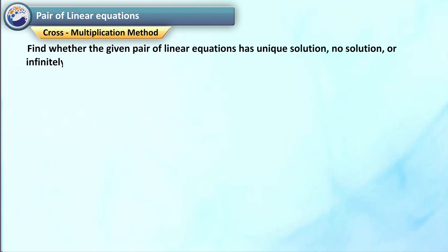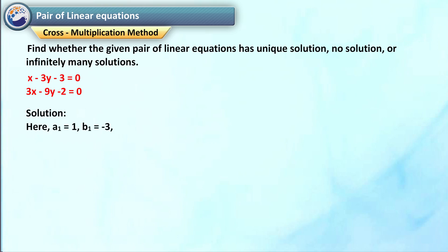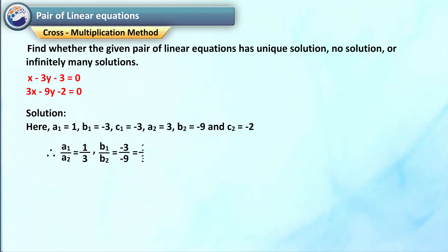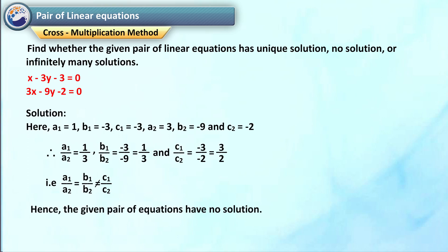Find whether the given pair of linear equations has a unique solution, no solution, or infinitely many solutions: x minus 3y minus 3 is equal to 0 and 3x minus 9y minus 2 is equal to 0. Solution: Here a1 is equal to 1, b1 is equal to minus 3, c1 is equal to minus 3, a2 is equal to 3, b2 is equal to minus 9, and c2 is equal to minus 2. Therefore a1 upon a2 is equal to 1 upon 3, b1 upon b2 is equal to minus 3 upon minus 9, that is 1 by 3, and c1 upon c2 is equal to minus 3 upon minus 2, that is 3 by 2. Since a1 upon a2 is equal to b1 upon b2 but not equal to c1 upon c2, the given pair of equations has no solution.